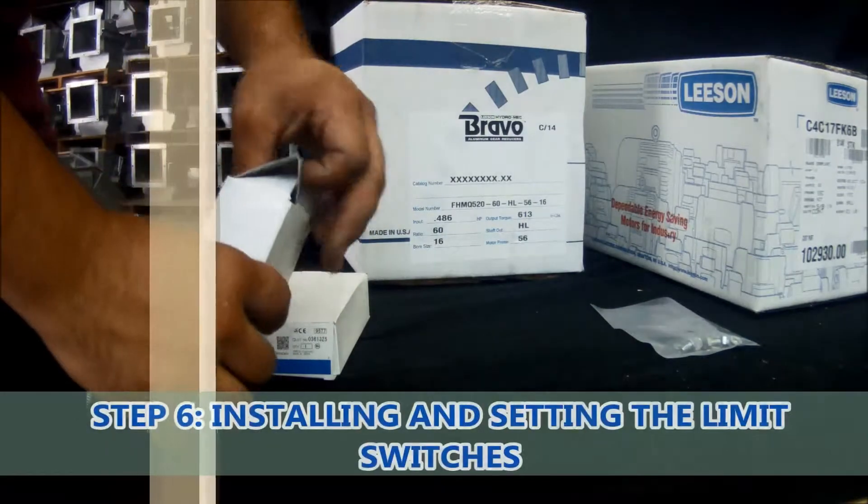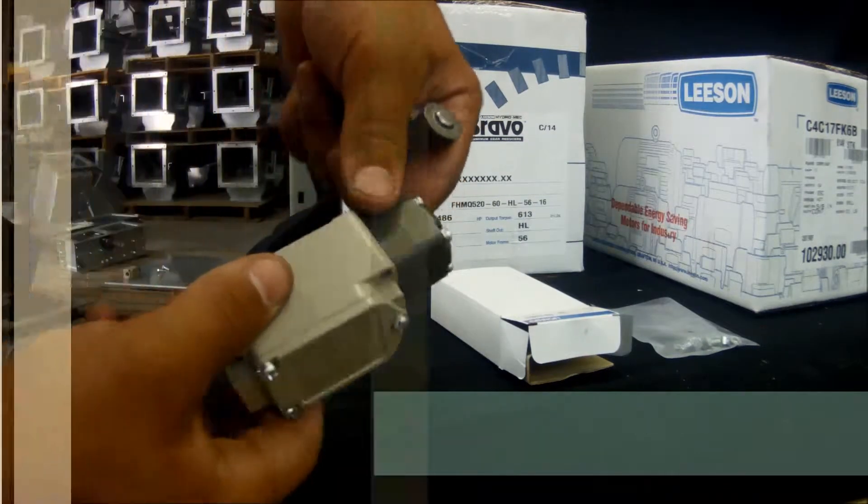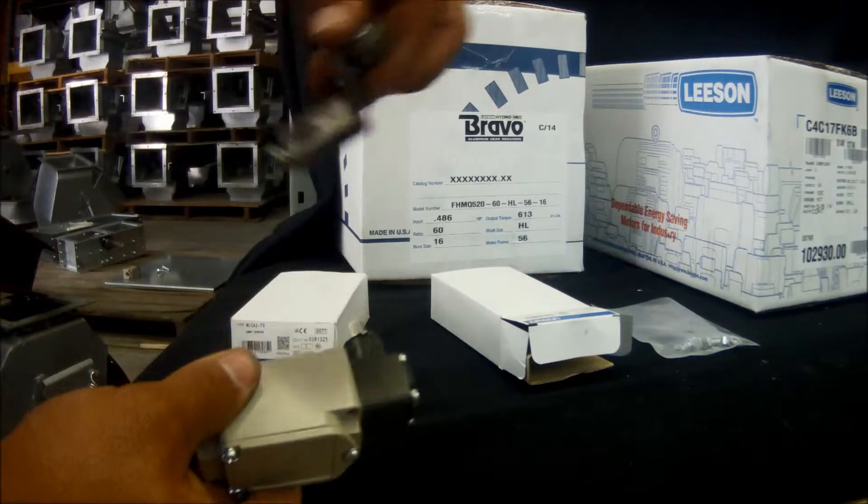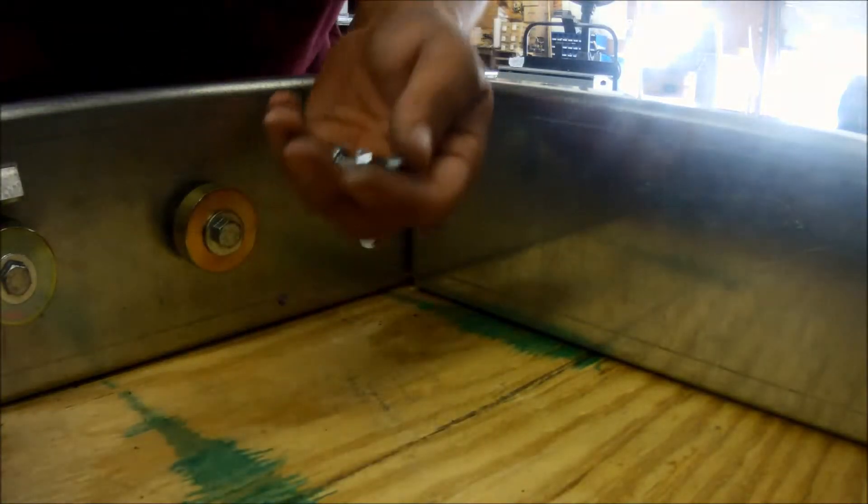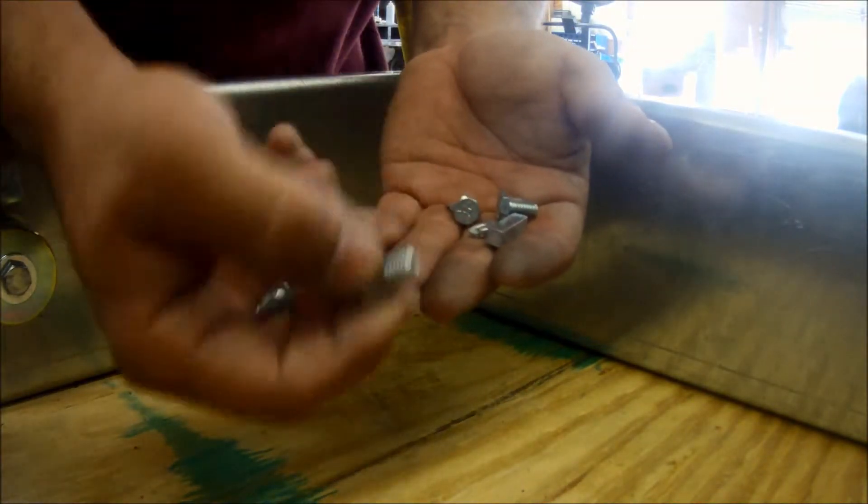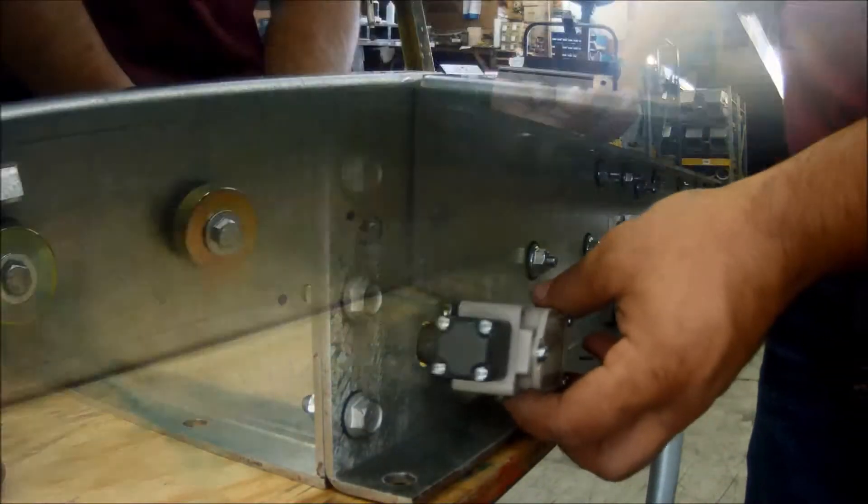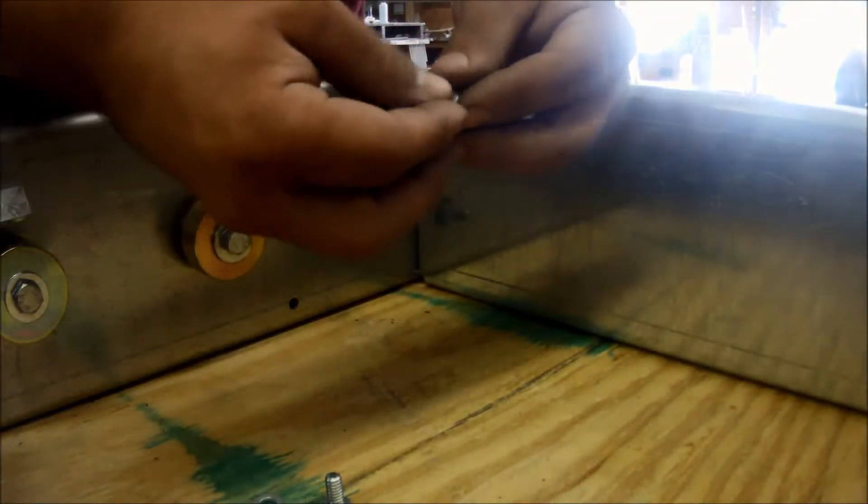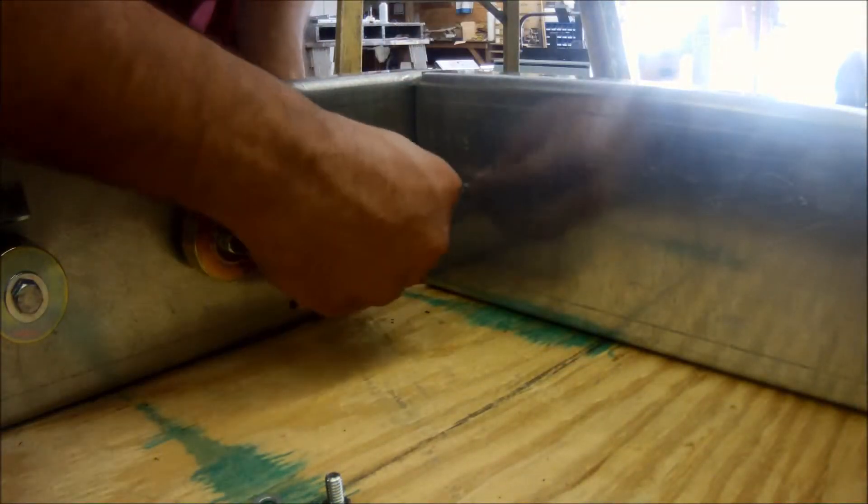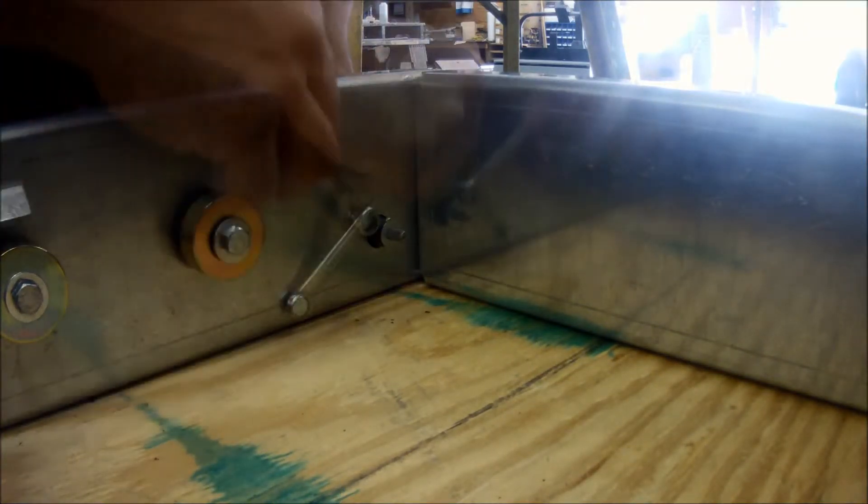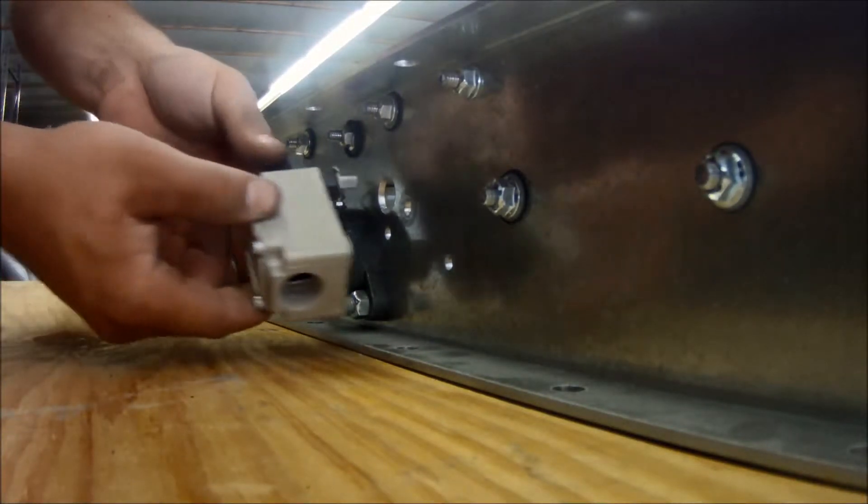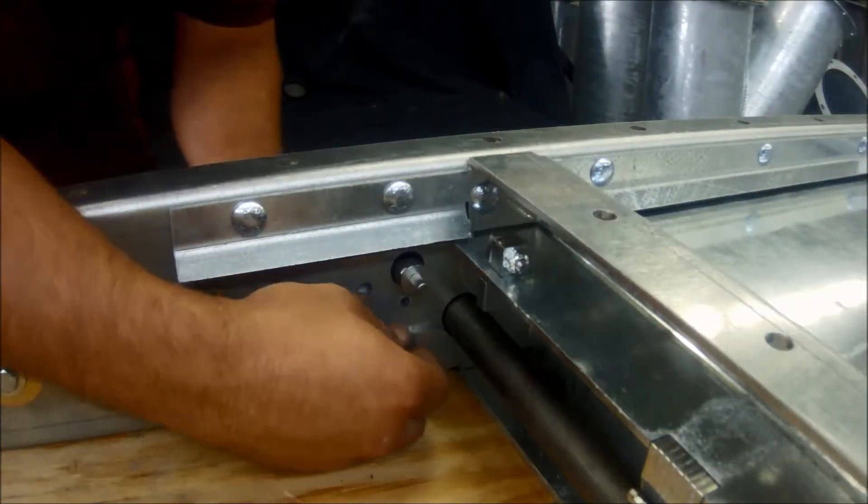We will now install the limit switches. This is the limit switch that comes in the kit. One switch and one arm per box. There should be two boxes. The mounting hardware for the limit switches come in a separate bag. Install the limit switch with the electric cover outside. Next, bolt the limit switch in place. Be sure not to over tighten these bolts. Again, we will install the limit switch for the other side of the gate.